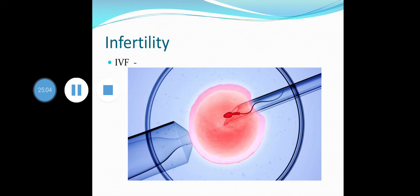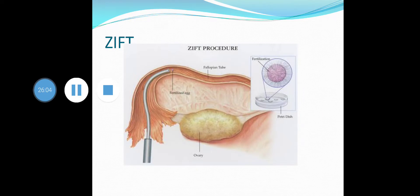Infertility is defined as the inability to conceive naturally after one or more years of intercourse. The causes could be physical, congenital, diseases, immunological, or physiological disorders. There are various techniques to address infertility. IVF — in vitro fertilization — is a process where an egg is combined with sperm outside the body in a test tube. The zygote is formed and then the zygote or early embryo is inserted into the fallopian tube of the mother.